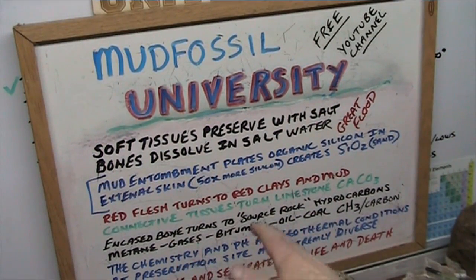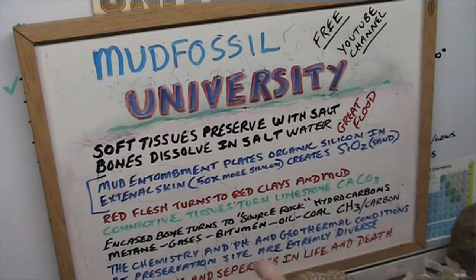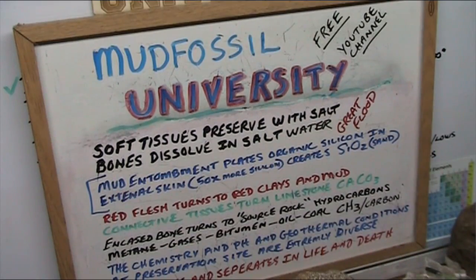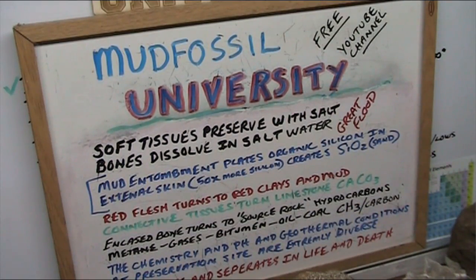Encased bone turns to source rock — those are encased bones, which are hydrocarbons: methane, gases, bitumen, oil, coal. It's CH3s, which is carbon — pretty much methane and all that. Combustive stuff — fossil fuels.